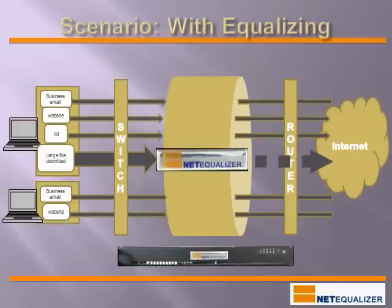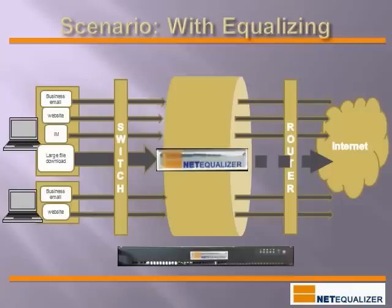NetEqualizer solves this problem and many other similar bottlenecks automatically. Equalizing looks at the behavior of the applications and their usage patterns. By adhering to some simple rules of behavior, real-time latency-sensitive applications such as email can be differentiated from heavy non-real-time activities such as large file downloads, and thus be granted priority on the fly without needing any specific policies to be set by the network administrator.